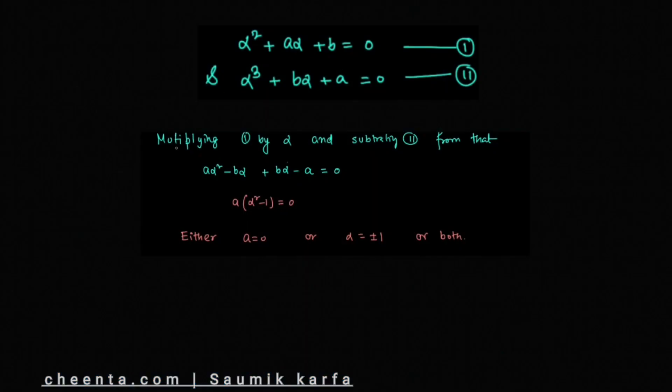We will multiply equation 1 by α and subtract it from equation 2. We get aα² - bα + bα - a = 0 because α³ and α³ cancel each other. By simplifying, we get a(α² - 1) = 0. So the possibilities are either a = 0 or α = ±1, or both.